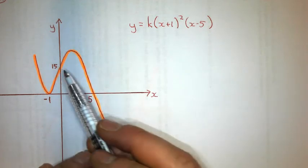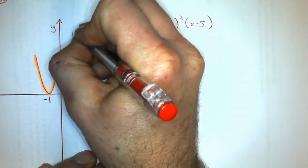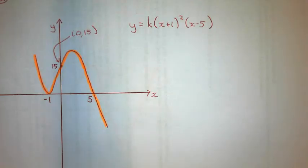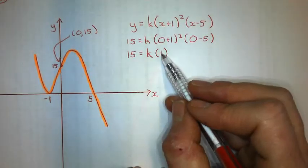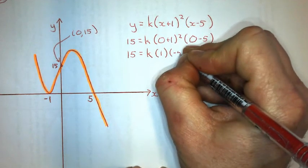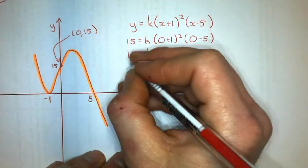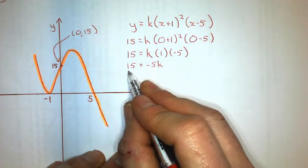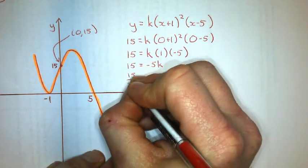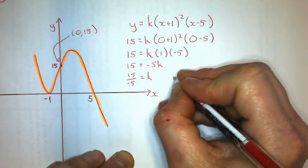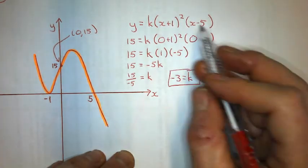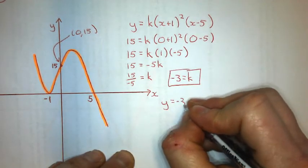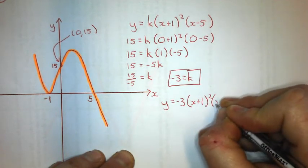I substitute the y-intercept (0, 15) in for x and y to solve for k. Don't forget: one squared is one, not two. Simplifying the number part gives me 15 = −5k. Dividing 15 by negative 5 gives k = −3. Substituting that back in, the equation is y = −3(x + 1)²(x − 5), which is negative as expected for a down-up-down graph.